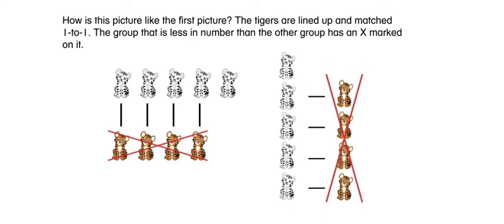How is this picture like the first picture? The tigers are lined up and matched one to one, and the group that is less in number than the other group has an X marked on it.